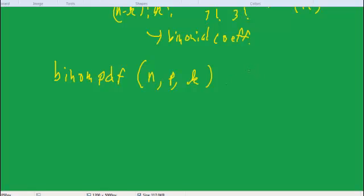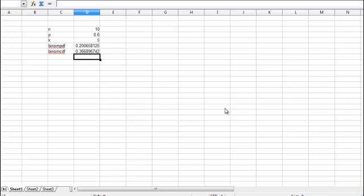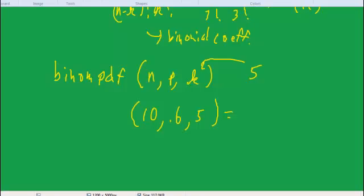So if we're asking what's the probability of making 5 free throws, then we would input: 10, because we're shooting 10 free throws; 0.6, because that's the probability of making each one; and 5, because that's the number we're interested in. If we stick that in the calculator, we get 0.20.